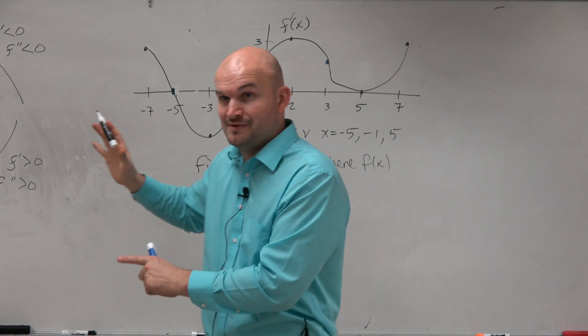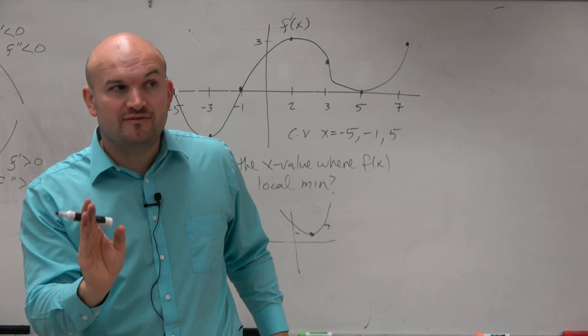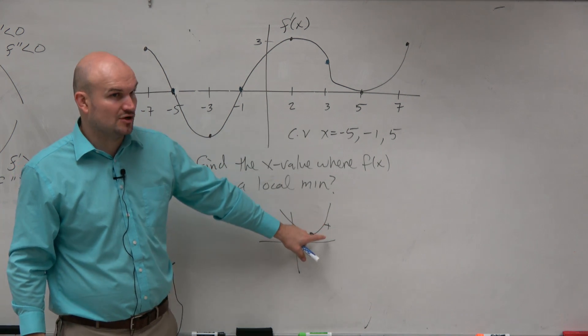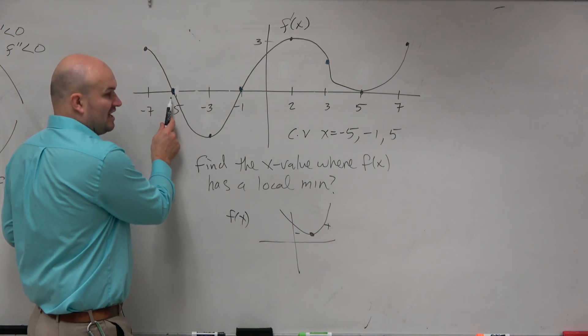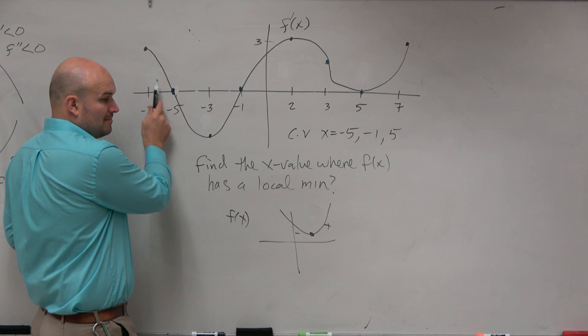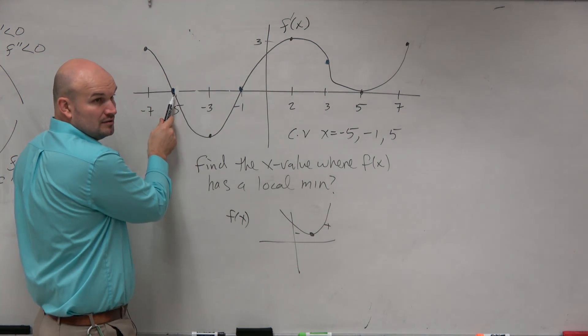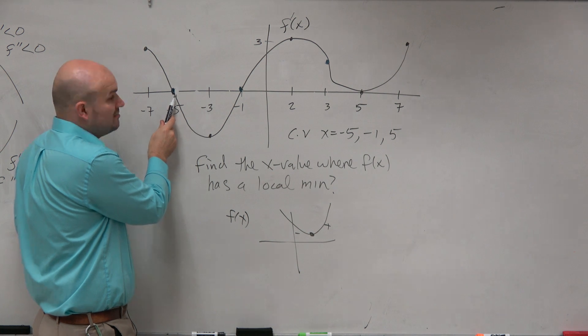Those are your possible critical values. But we're only looking for the critical value when we change from a negative slope to a positive slope. So let's look at the first critical value, negative 5. We're changing from a positive to a negative. So is that a minimum value? No, that would be a relative max.